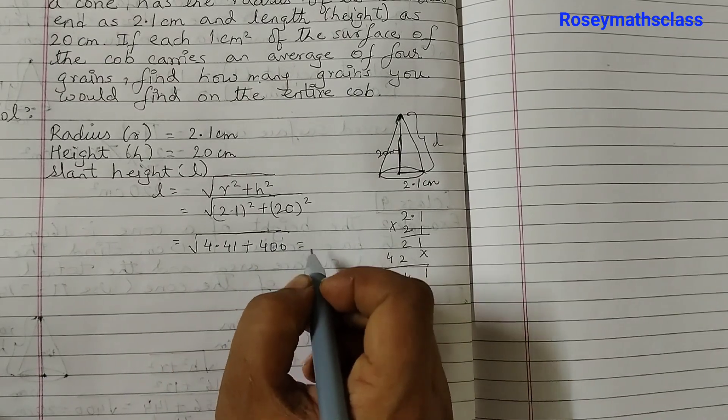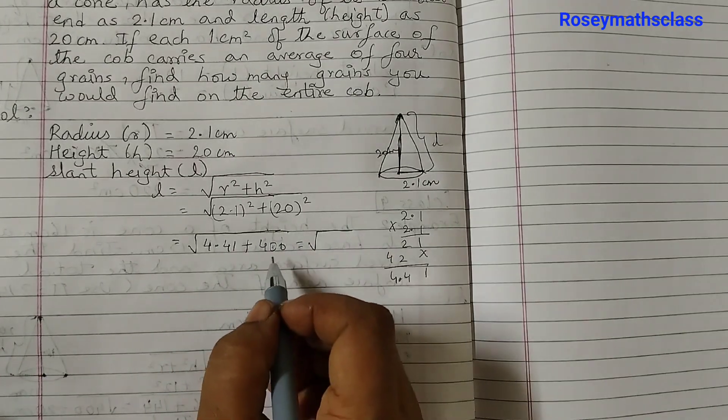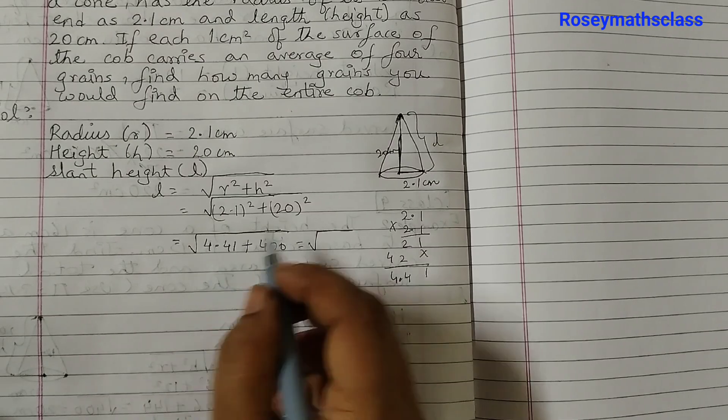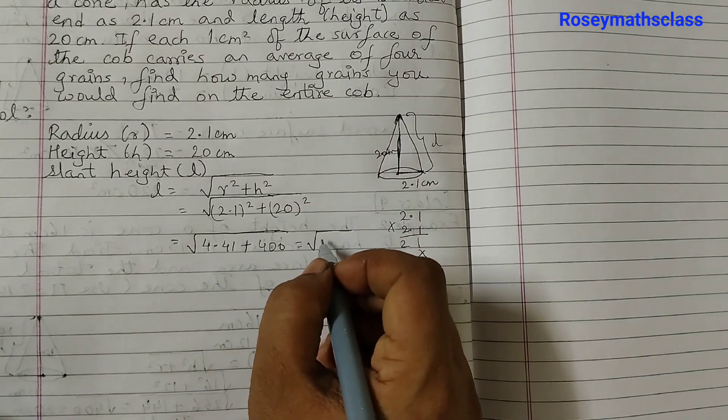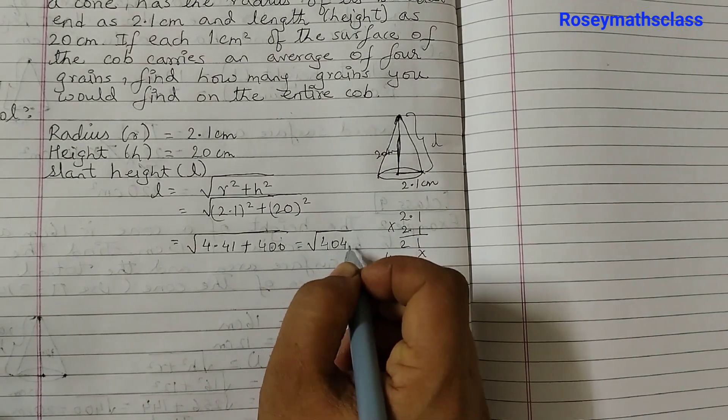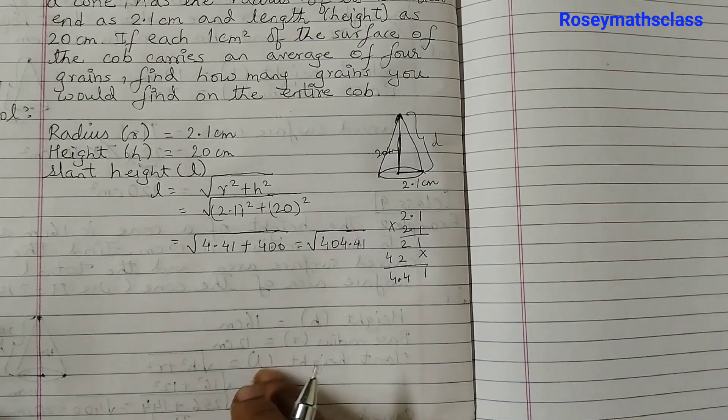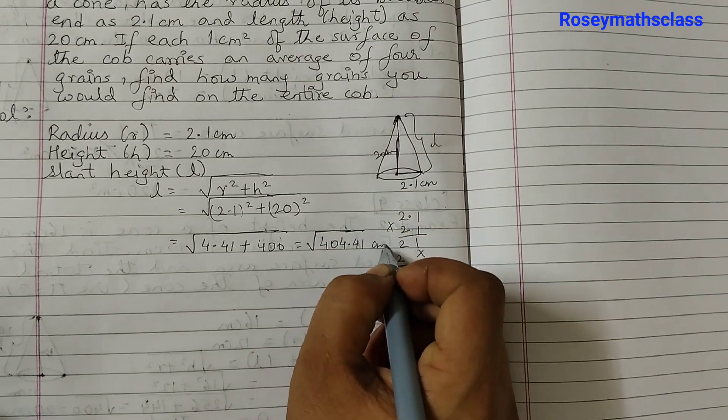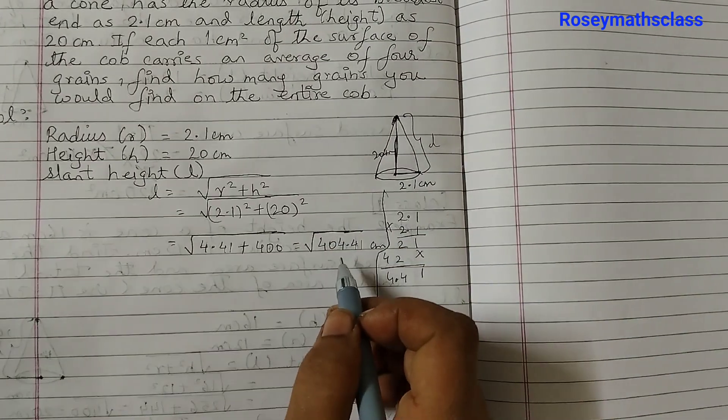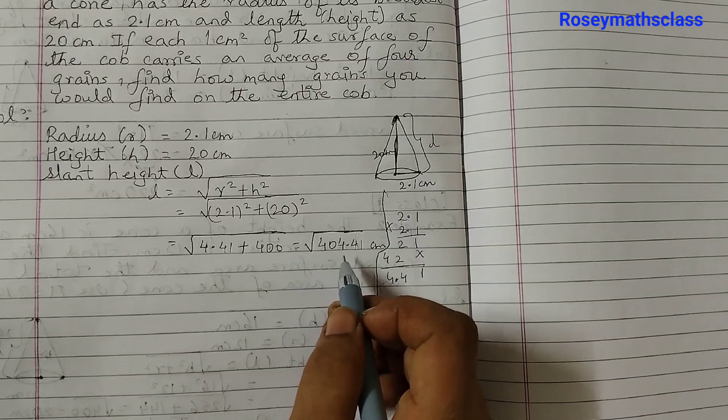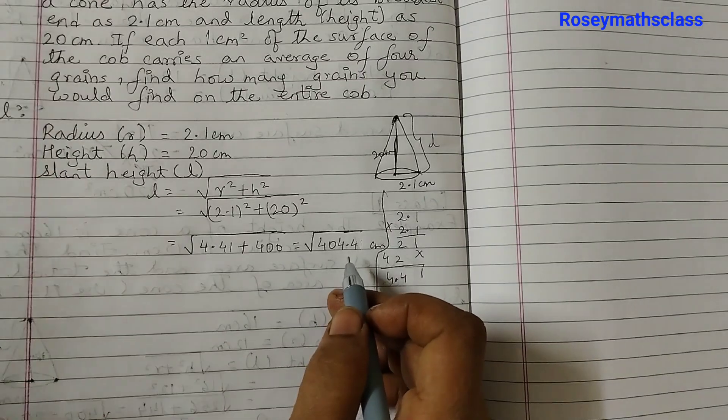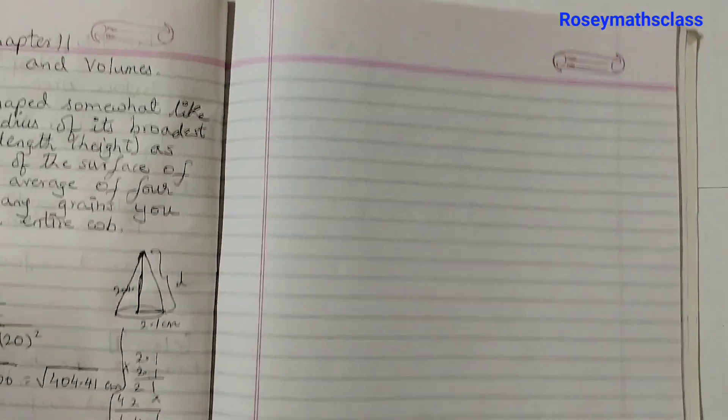So this is equal to square root of 4.41 plus 20 into 20 is 400. So that equals to square root of 404.41. Now we need to find the square root of this and this is the place where most students find it difficult. So let's find the square root on a different page.